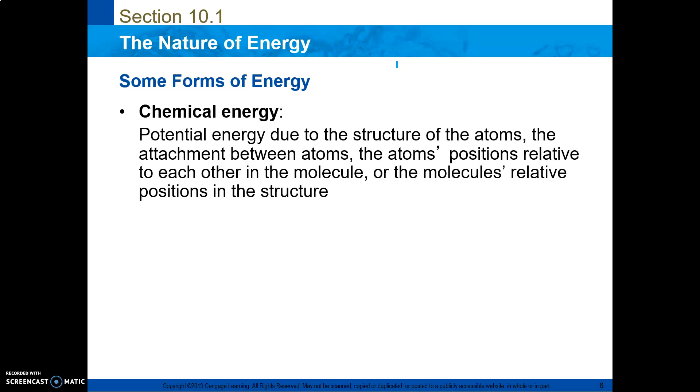When we're focusing on chemical energy, which is the energy found in food, it's a type of potential energy. It's a very specific type of potential energy that has to do with how the atoms are arranged, how atoms are attached to other atoms, how they're relative to the molecule, how the molecule is relative to a different molecule.